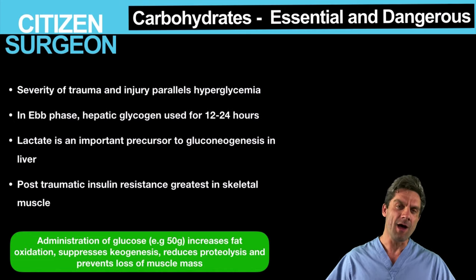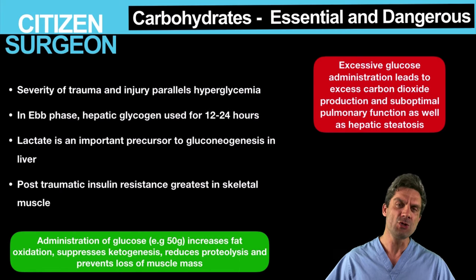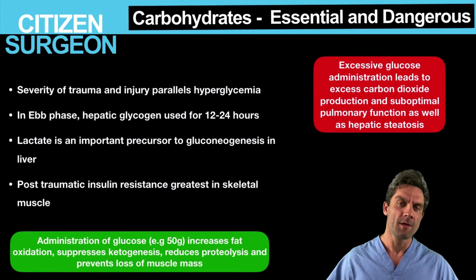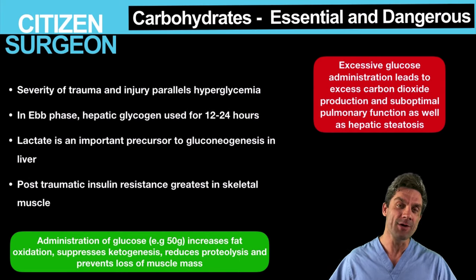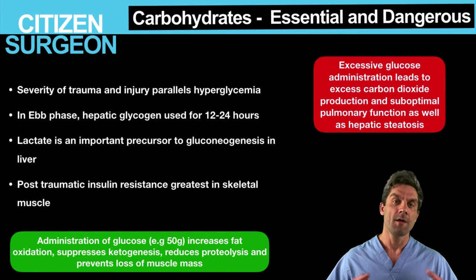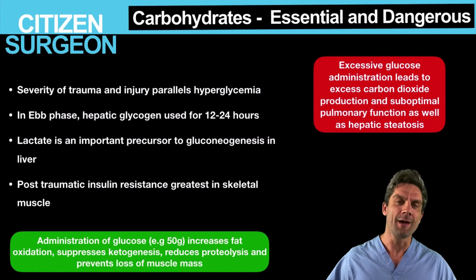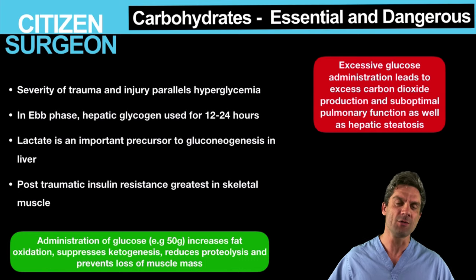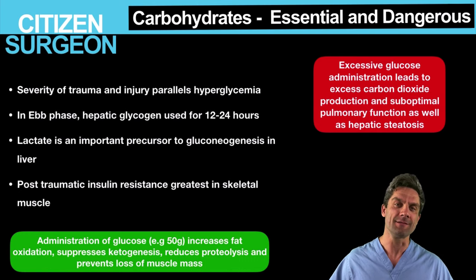But the cost is that too much glucose leads to hepatic steatosis. It also leads to excess carbon dioxide production, which leads to suboptimal pulmonary function. So we can't talk about carbohydrate utilization or metabolites in general without talking about insulin.